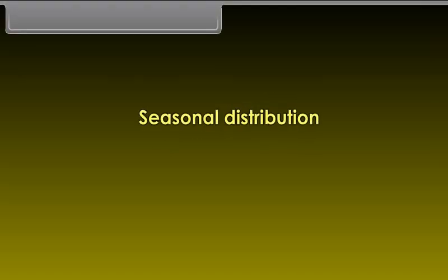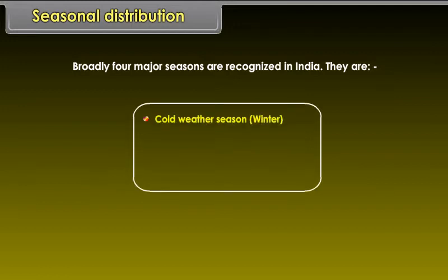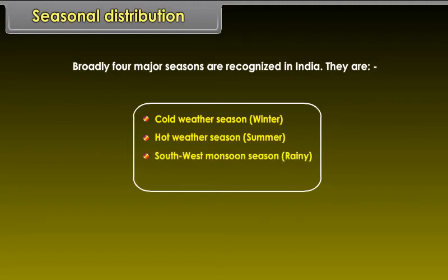Broadly, four major seasons are recognized in India. They are: cold weather season (winter), hot weather season (summer), southwest monsoon season (rainy), and season of retreating monsoon.